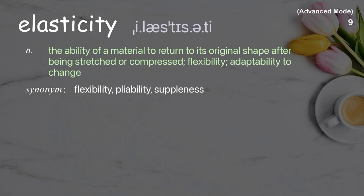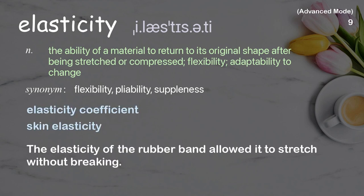Elasticity. The ability of a material to return to its original shape after being stretched or compressed; flexibility and adaptability to change. Examples: Elasticity coefficient. Skin elasticity. The elasticity of the rubber band allowed it to stretch without breaking.